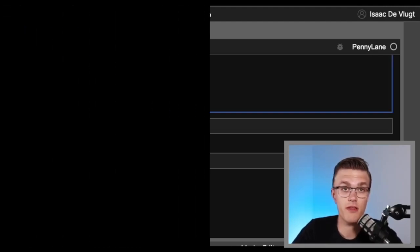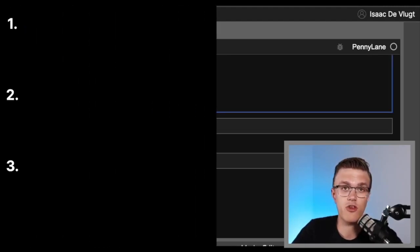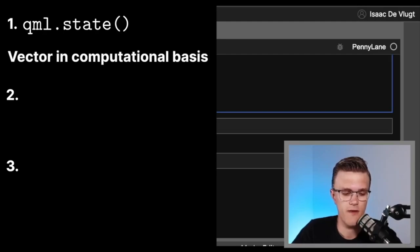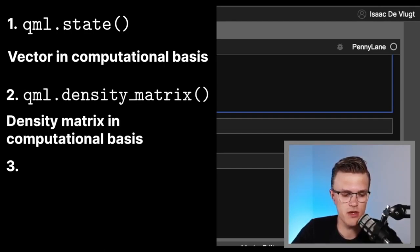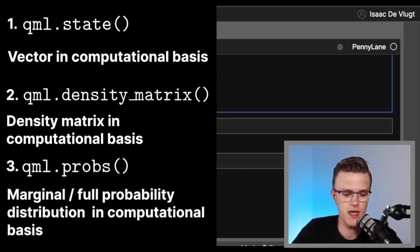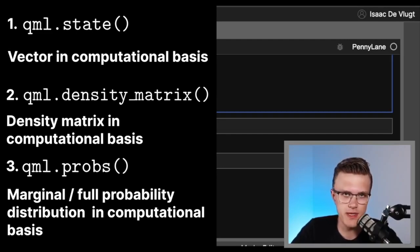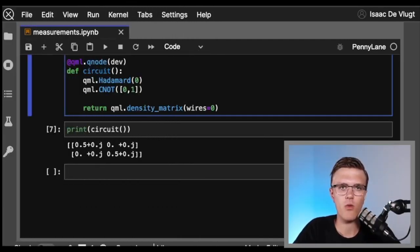To summarize so far, we've looked at three different measurements: qml.state, which gives us the full vector representation of our quantum state in the computational basis; qml.densityMatrix, which gives us the density matrix representation of our quantum state; and qml.probs, which given a set of wires gives us the probability of measuring each computational basis state. But let's now talk about what changes when we want to measure things from real quantum hardware.